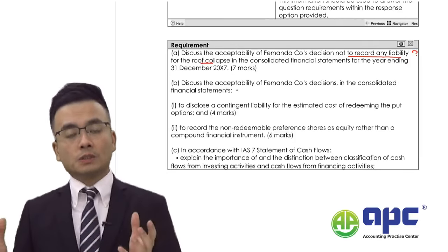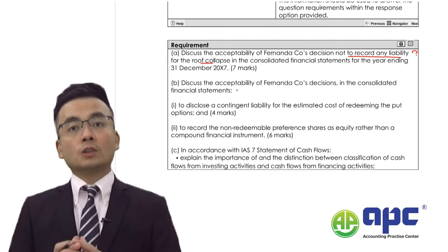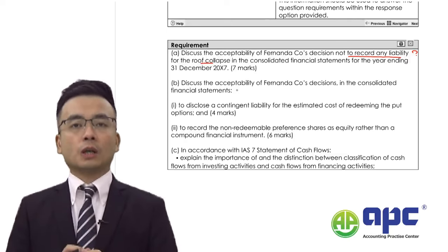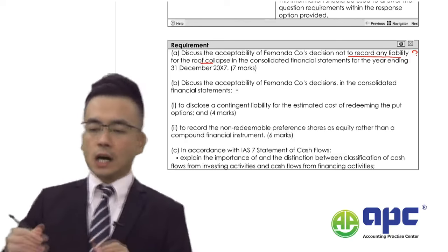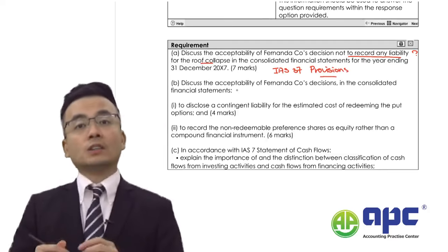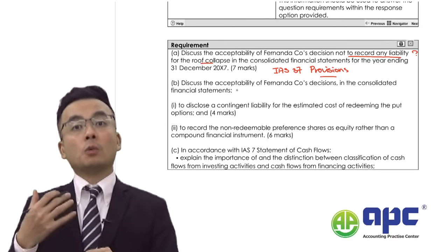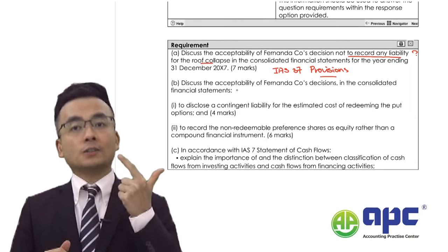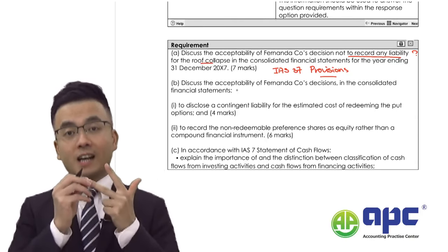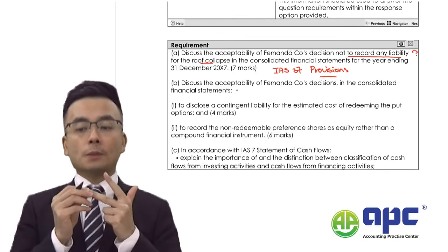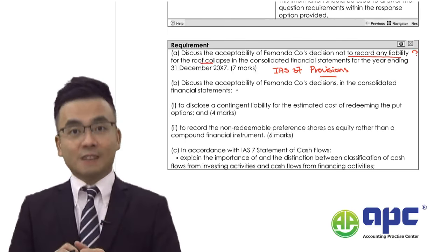From the case, the management decides not to record any liabilities at all — this is not acceptable, perhaps, but it may be acceptable if this is at the early stage of the case. According to IAS 37, provisions, contingent liabilities, and contingent assets, we need to apply the correct accounting treatment. I would detail this in three steps: the IAS 37 requirements, application to the case, and conclusion about the right accounting entry. Seven marks means seven sentences.